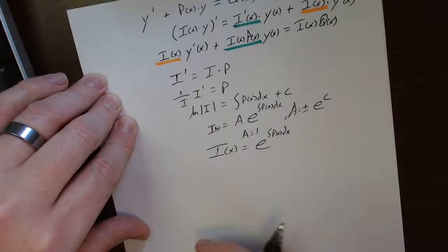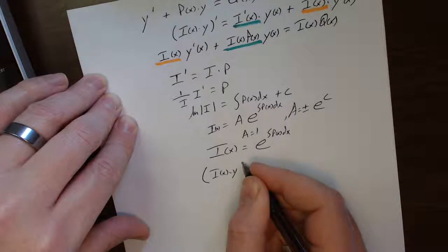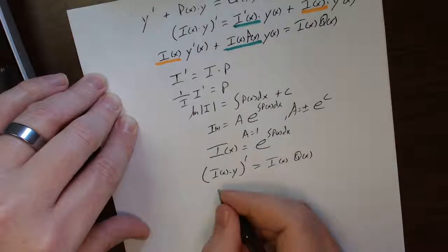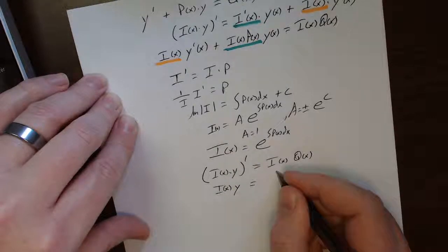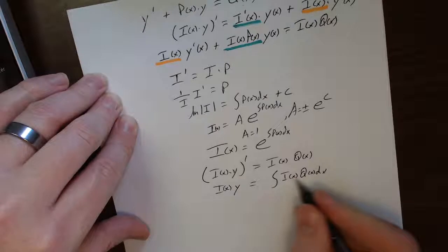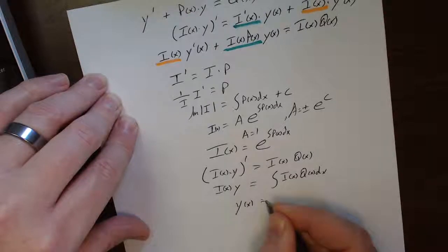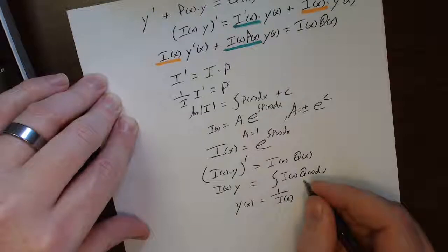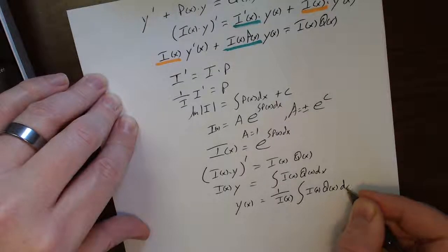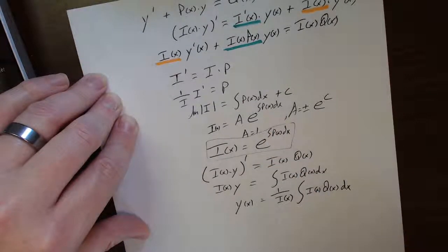And then look what happens. This whole thing up here would collapse down to i of x times y prime is equal to i of x q of x. And I'll integrate both sides, and I get i of x, y is equal to the integral of i of x q of x, which is something. I don't know what, but it's something, and that's going to have a constant that comes out of it. And then whatever it is, I'll divide by i of x. And so my solution in the end is this, i of x, q of x, dx. Where the constant of integration is in here, and the i of x is given by this. Let's do an example.